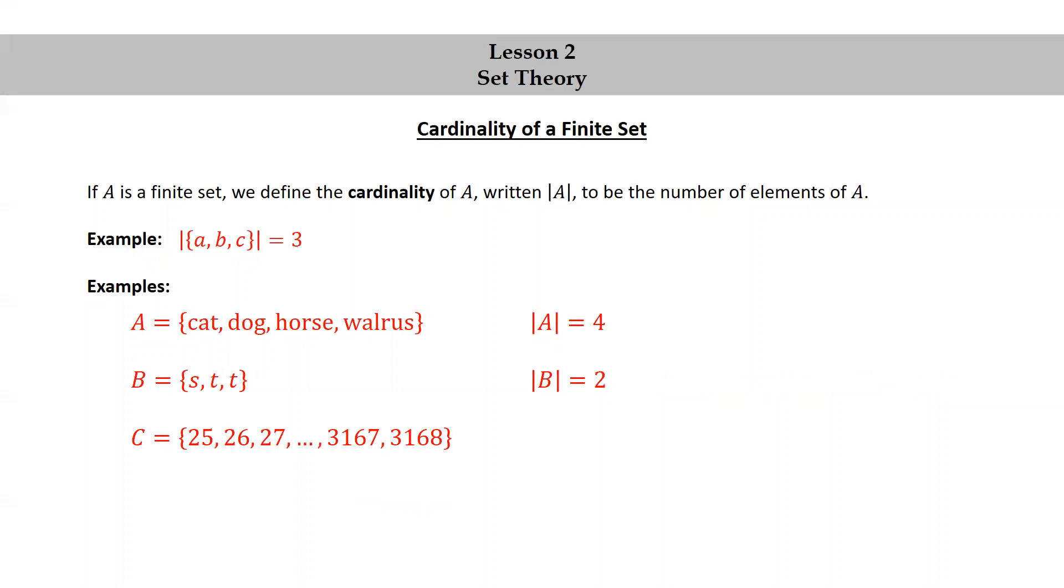Let C be the set consisting of {25, 26, 27, ..., 3167, 3168}. Then the cardinality of C is 3,144.